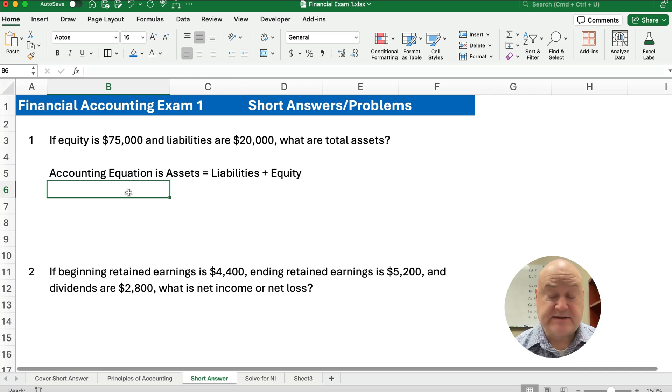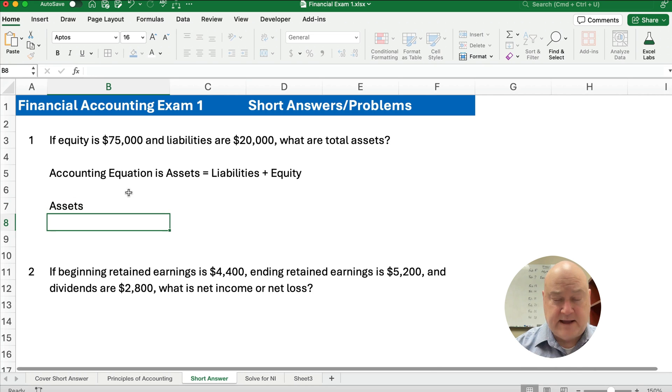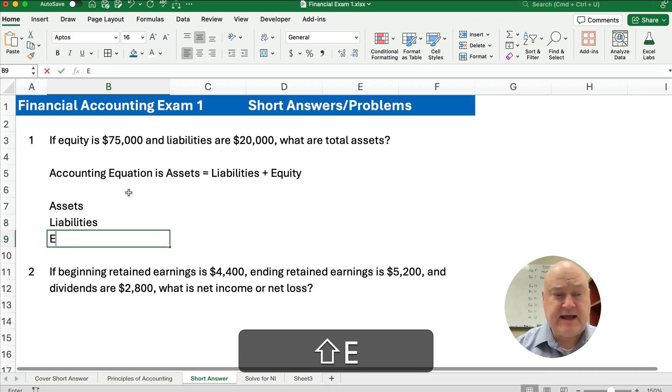Your professor could ask on a test, what is the accounting equation? Well, that's memory work: assets equals liabilities plus equity. But if you do it in a problem like this, this tests that you know the formula but also that you understand how the math works. So what you need to do is set up assets and then liabilities and then equity.